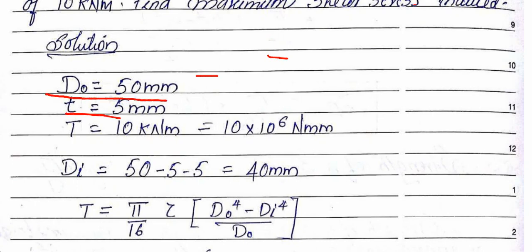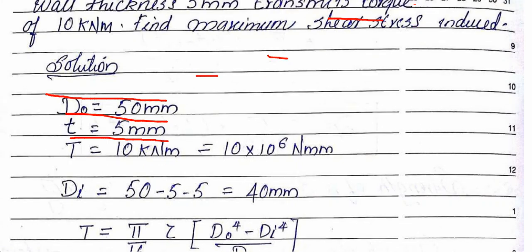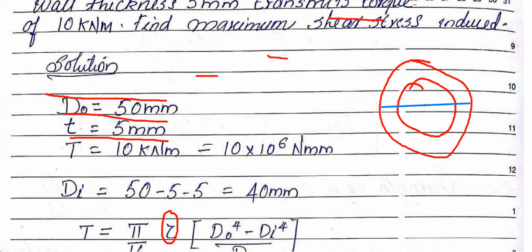The outer diameter is 50mm, thickness is 5mm, and torque is 10 kilonewton-meter. To calculate maximum shear stress, we need to find D_inner. The inner diameter equals the outer diameter minus twice the wall thickness. For a circular shaft, measuring from the center, D_outer is 50mm.